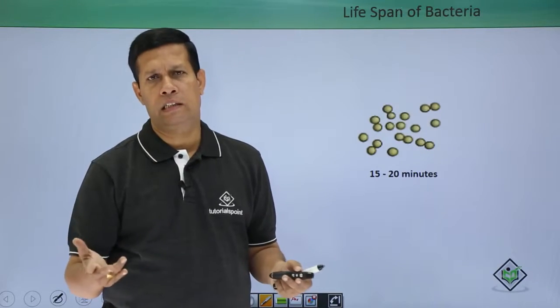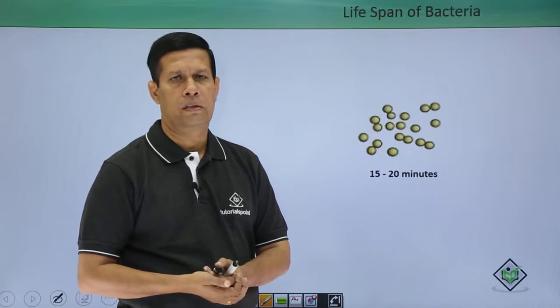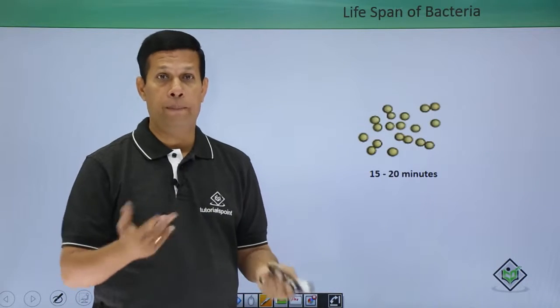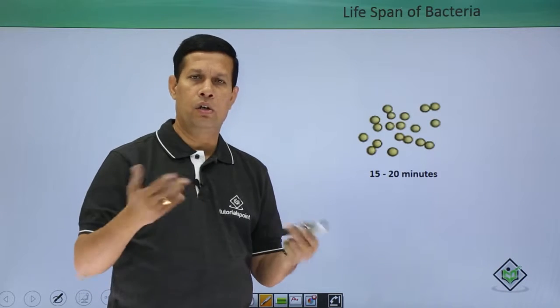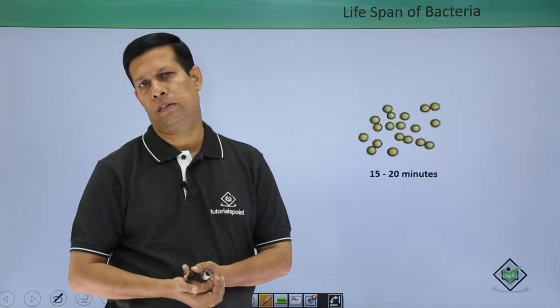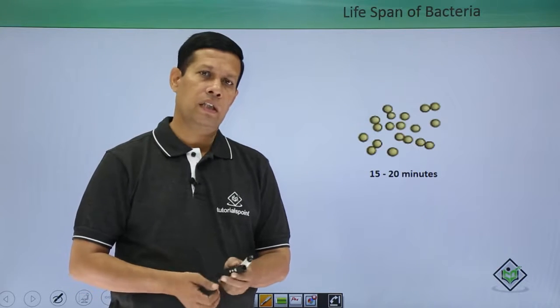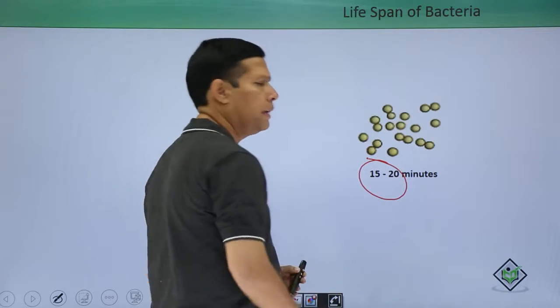Bacteria divide every 15 to 20 minutes. They are very fast, very rapid in their growth, because they undergo division every 15 to 20 minutes. So, the life span of bacteria is considered as 15 to 20 minutes.